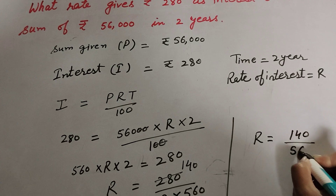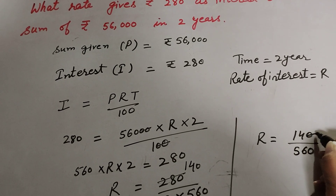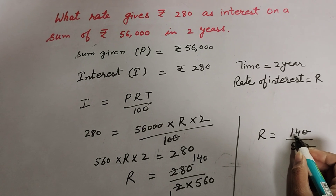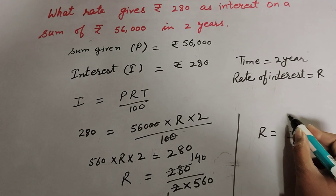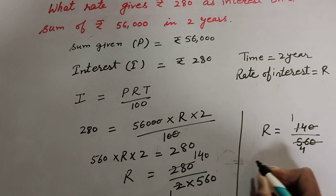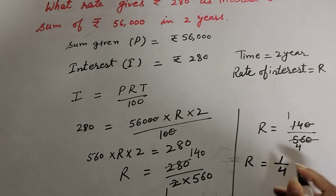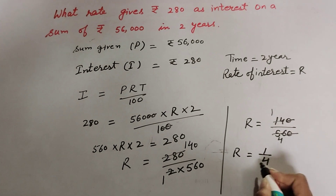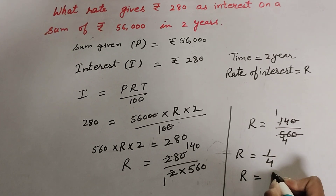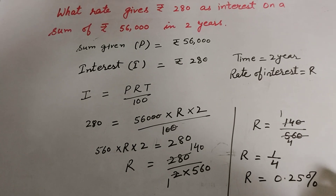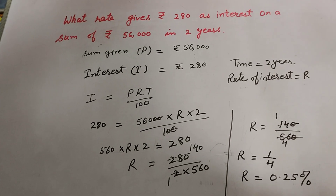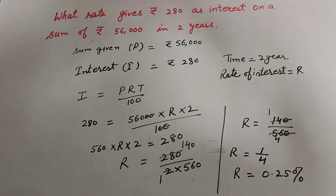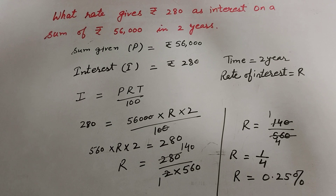The zero in numerator and denominator cancel, leaving 14 over 56. Both are divisible by 14, so R = 1 over 4. Dividing 1 by 4 gives 0.25, so the rate of interest equals 0.25 percent. Thanks for watching, like and share my video, subscribe to my YouTube channel.